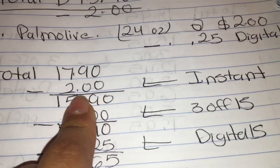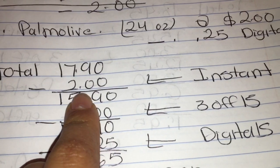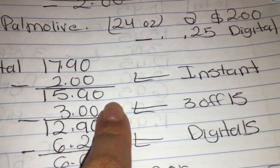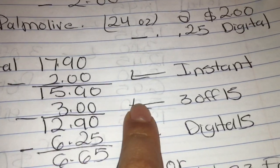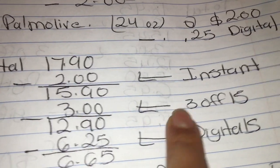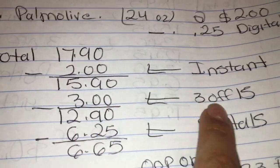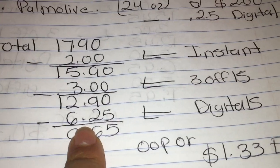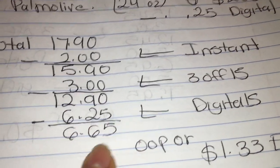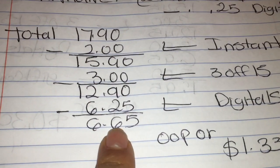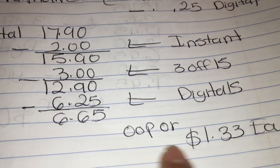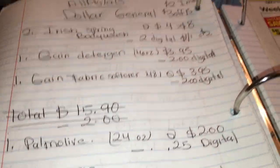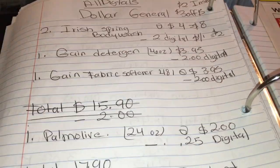Su total de esta compra va a ser diecisiete con noventa. Aquí le va a preguntar a la cajera que si puede oprimir su total a ver si su ahorro instantáneo de dos dólares se rebajó — su total le va a rebajar a quince con noventa. Aquí es donde va a poner su número de teléfono para que sus digitales y su cupón de tres en quince se descuenten — su total va a bajar a doce con noventa, menos seis veinticinco en digitales, su total va a ser seis con sesenta y cinco, o un dólar y treinta y tres centavos cada producto.